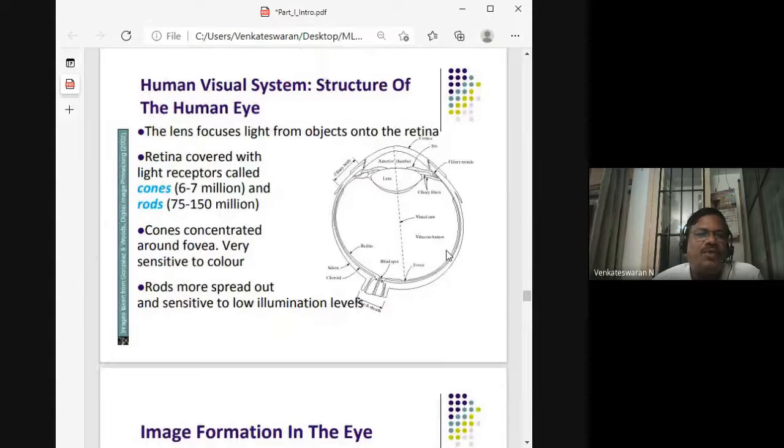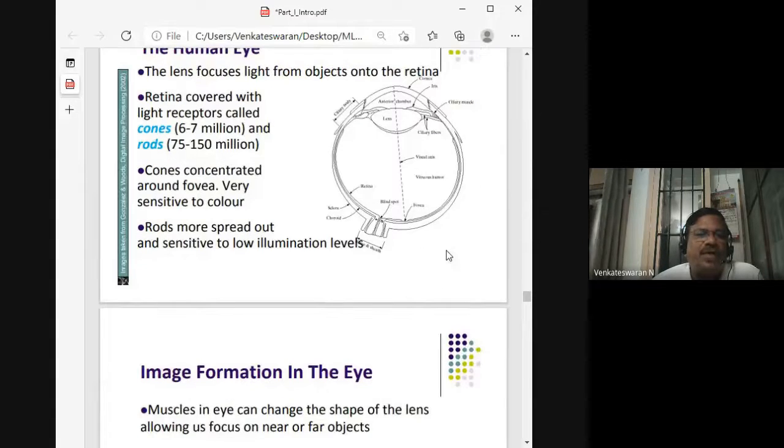The human visual system shows how the image is formed onto our eyes. There are two important components called cones and rods, which are the light receptors in our eyes. There are many cones.